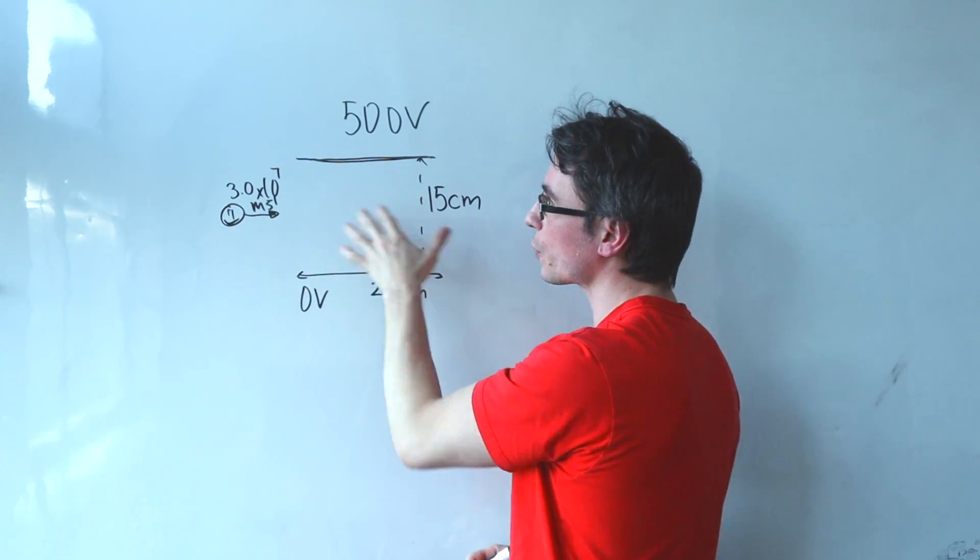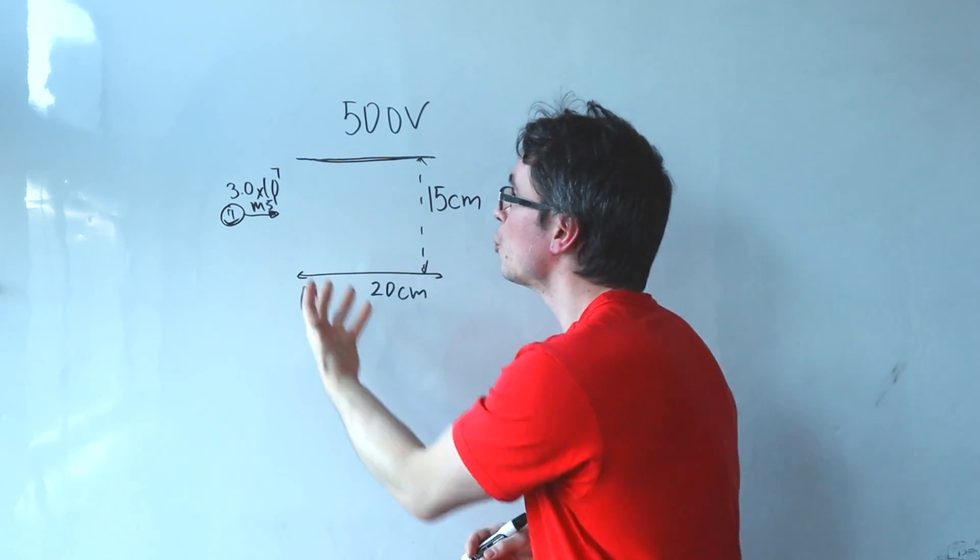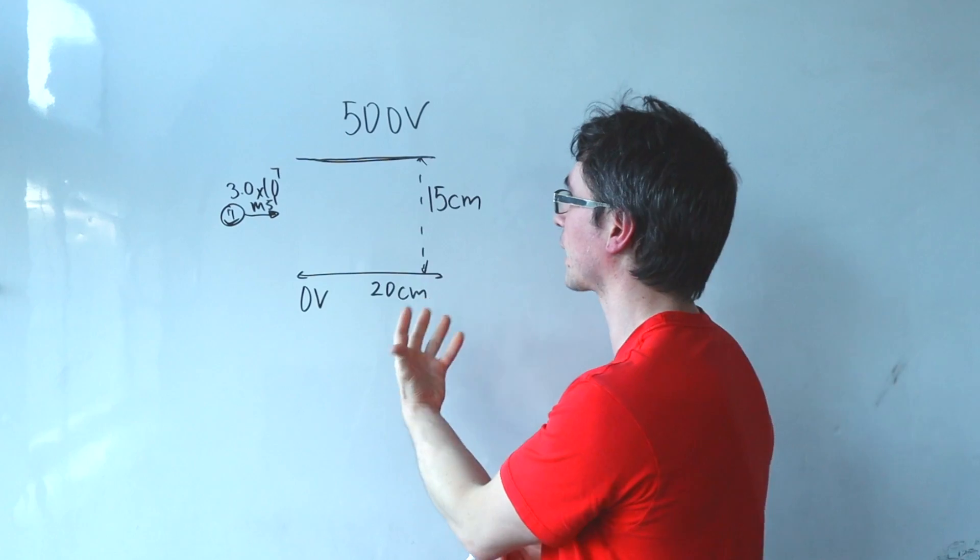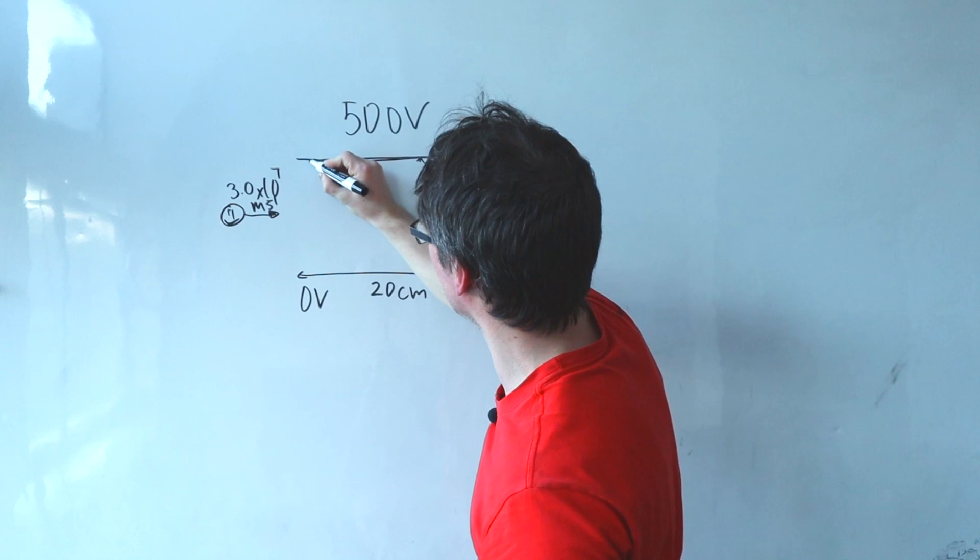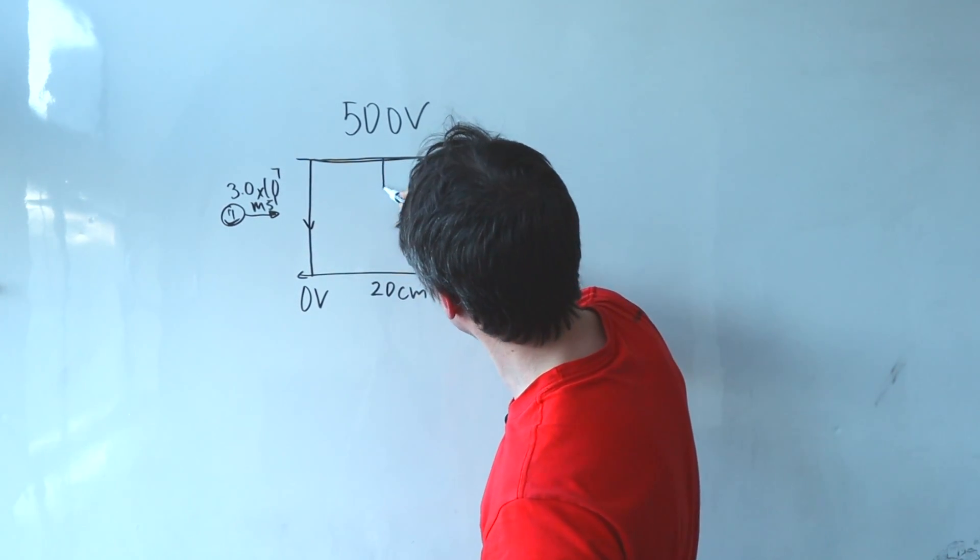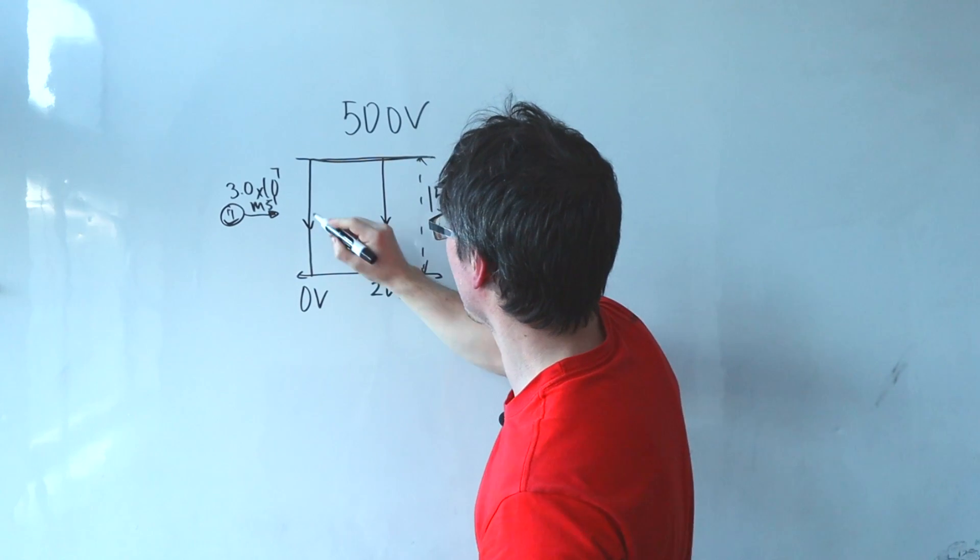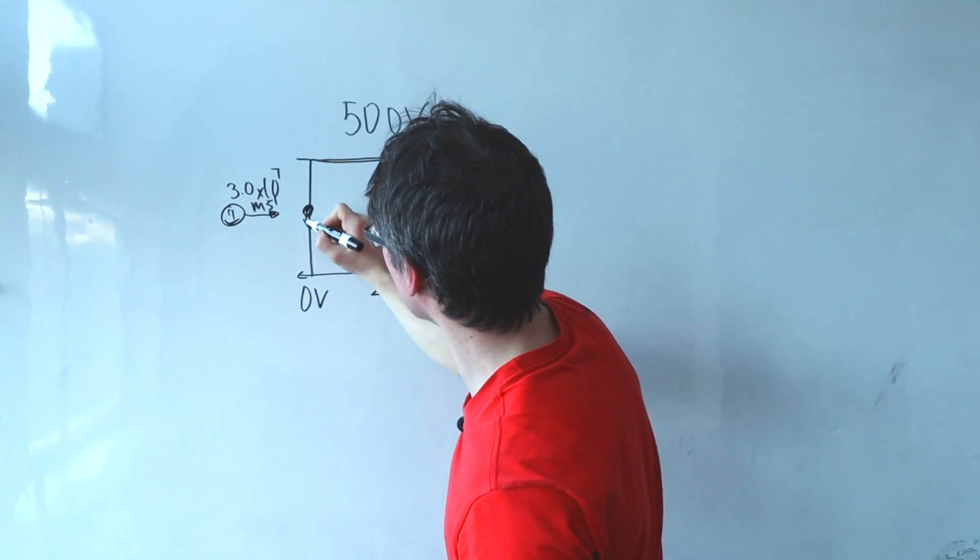Well what's going to happen to that proton? First of all the horizontal velocity should remain completely unchanged because there is no horizontal forces acting on this system. In fact the electric field between the plates will be from positive to negative, in other words in this direction. So as soon as the proton enters it will experience a force.